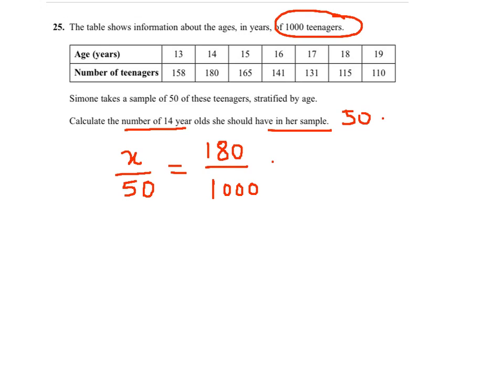The proportions are the same, so cross multiplying will give me x equals 180 over 1000 times 50.